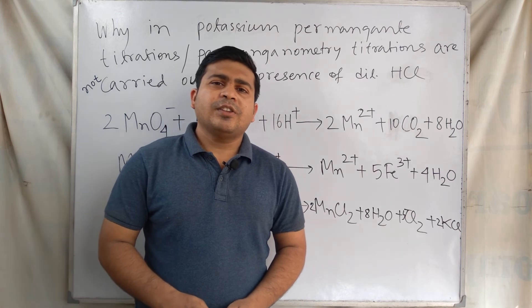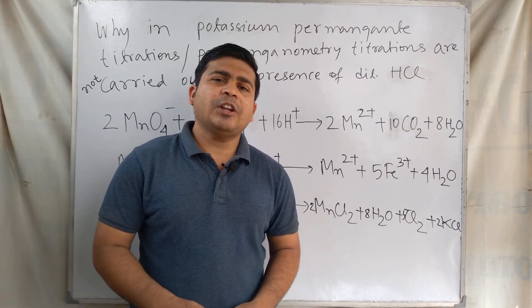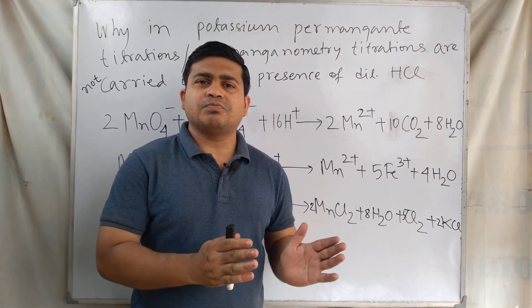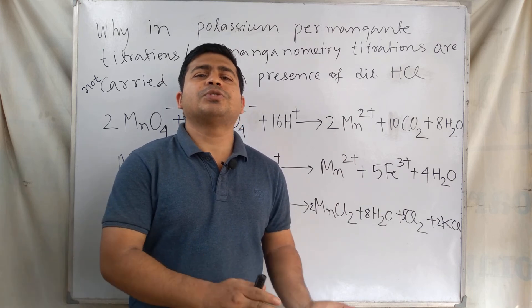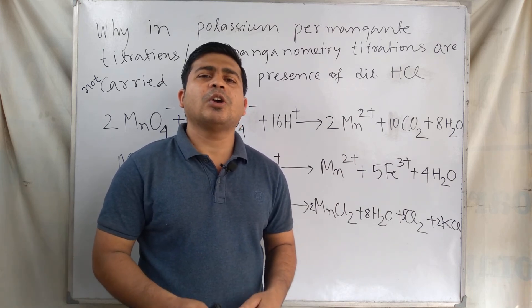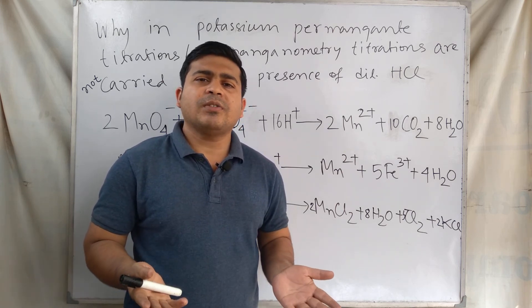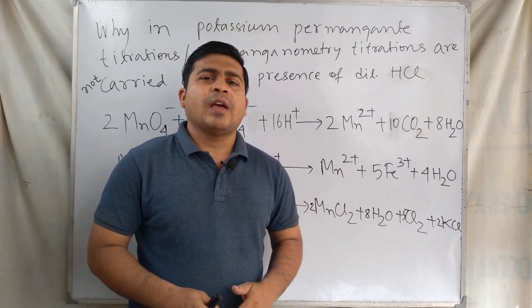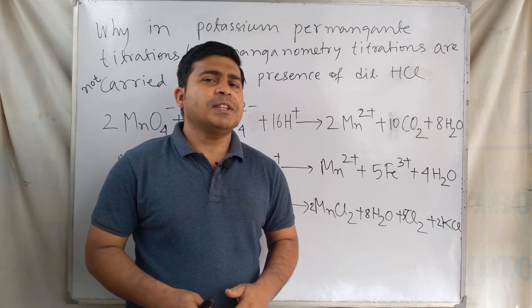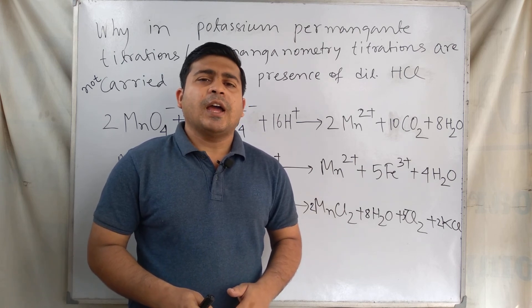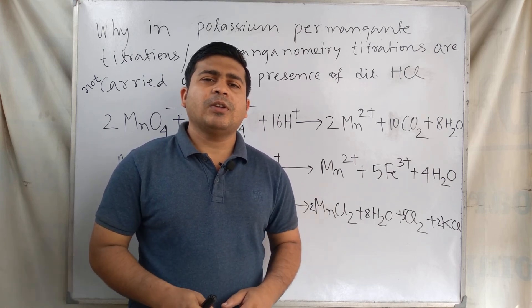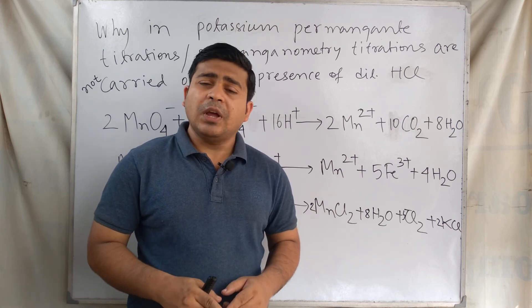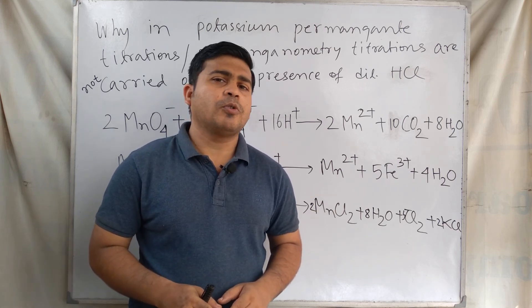I think you understand this topic well. If you still have any questions about why hydrochloric acid cannot be used in permanganometry titrations or other questions, you can write your questions in the comment section below. Thank you for watching this discussion, and don't forget to subscribe to this channel and press the bell button to get new video upload notifications.